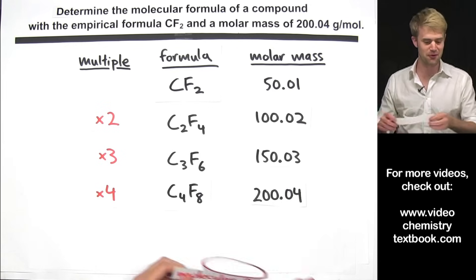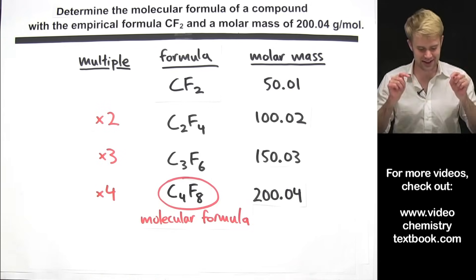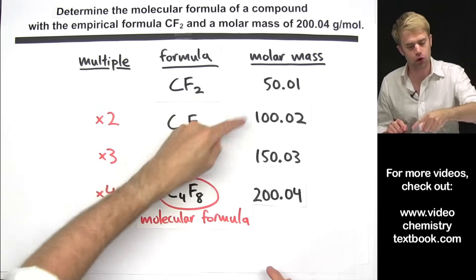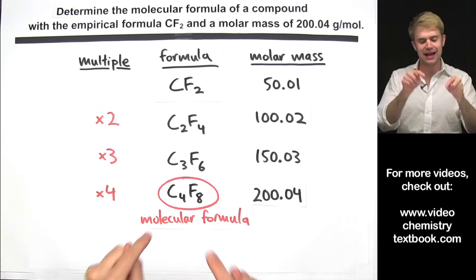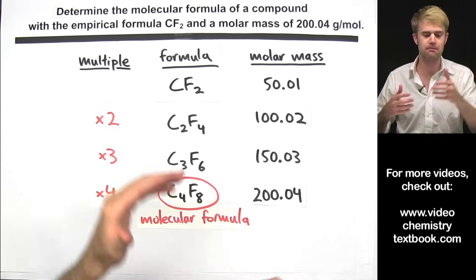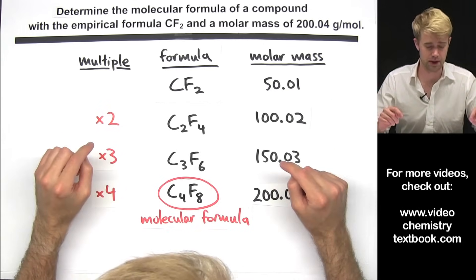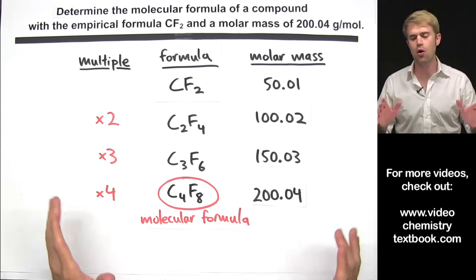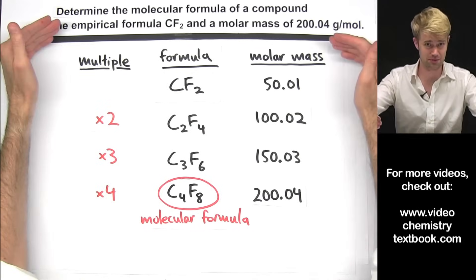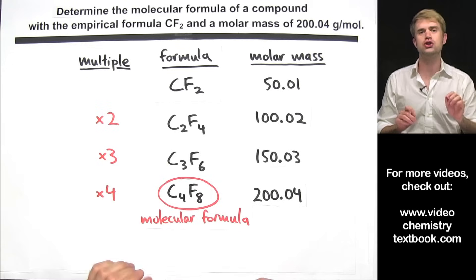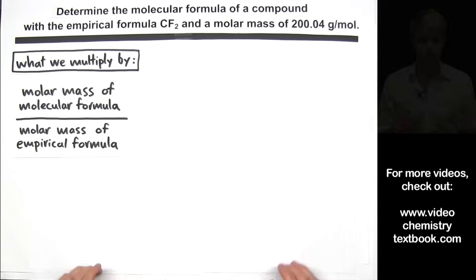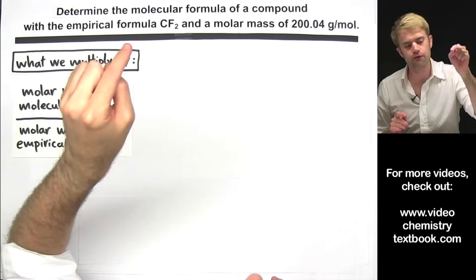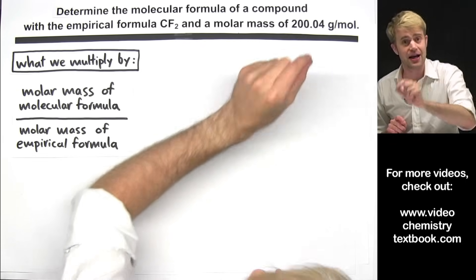200.04 is the molar mass we're looking for, so C4F8 is the molecular formula we want. What we're really asking is: what do we have to multiply the empirical formula by to get a molecular formula that has the molar mass we need? This chart lays things out clearly in terms of the multiples. But you don't want to make a chart like this every time, so let's look at a simpler method. Problems like this are all about finding what number to multiply the empirical formula by to get the right molar mass.